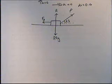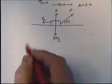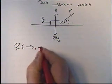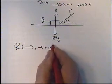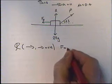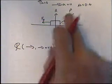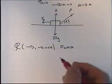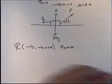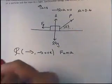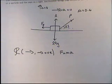Now we're going to try and find P. Let's start off by resolving forces. We're going to resolve horizontally, and I'm going to take the direction to the right as positive. Using Newton's second law of motion, force equals mass times acceleration. In this case, we know the acceleration is zero because the speed is constant. Every force acting to the right is positive, every force acting to the left is negative, and every force perpendicular to the plane we're resolving has a zero effect.